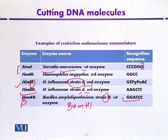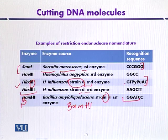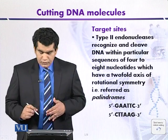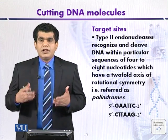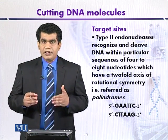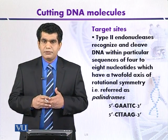The recognition sequence recognized by HinD II is represented as: G, then T, then any purine base, then any pyrimidine base, then any purine base, then adenine and cytosine. Enzymes may have different restriction sites, which will be discussed in the next chapter.